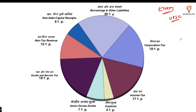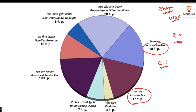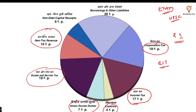Now we see the division of 1 rupee. Government always publishes this division. 18 paisa, or 18% of the total pie chart, comes from Corporate Income Tax (CIT). Income tax from individuals comes at 17% of total revenue. Custom duty is 4%, Union Excise Duty is 7%, GST is 18%. Non-tax revenue includes government fees, fines, and user charges — revenue not coming from taxation.